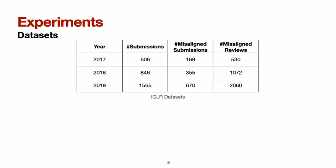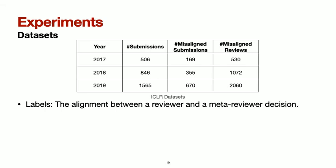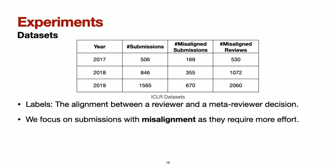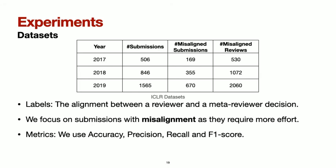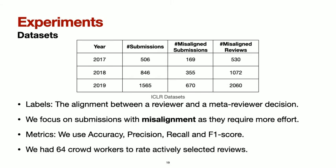We conduct a larger-scale experiment with workers from a crowdsourcing platform, using the publicly available ICLR dataset through Open Review. We collect reviews from 2017, 2018, and 2019. We consider a review to be conforming if the reviewer's decision and the meta-reviewer's decision are aligned. We evaluate our framework by training on one year and evaluating on the following year, focusing on submissions with misalignment as they require more effort. We had 64 crowd workers with a master qualification who rated the actively selected reviews.